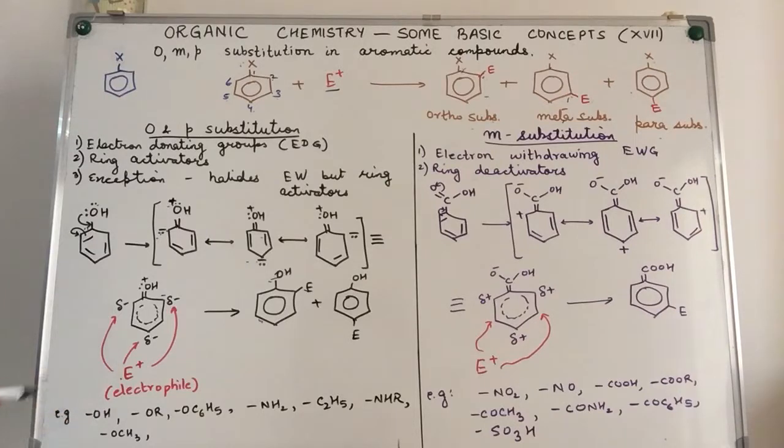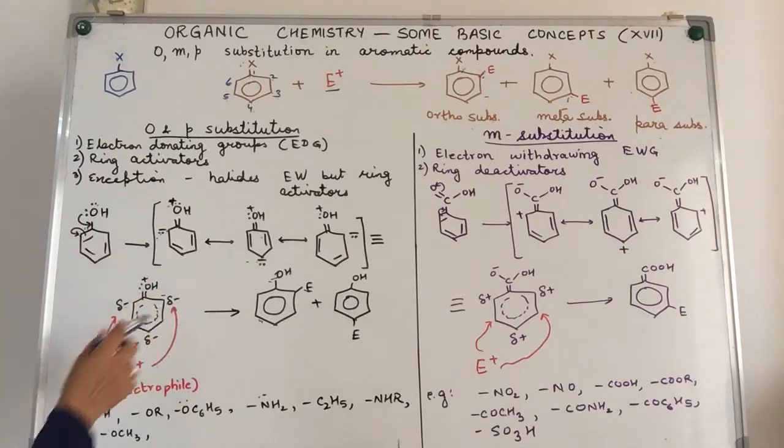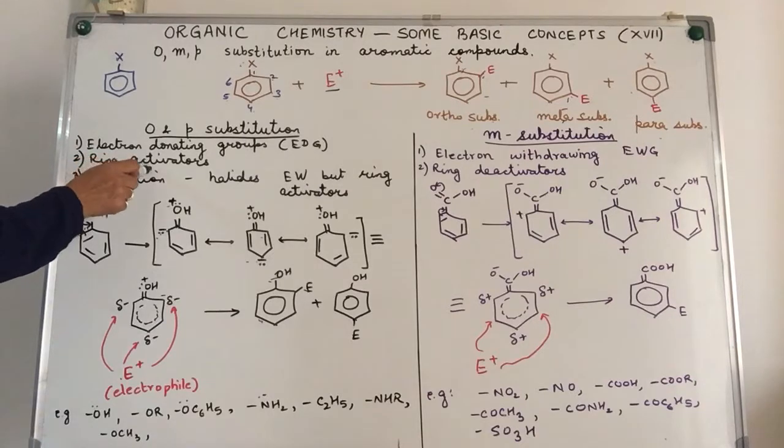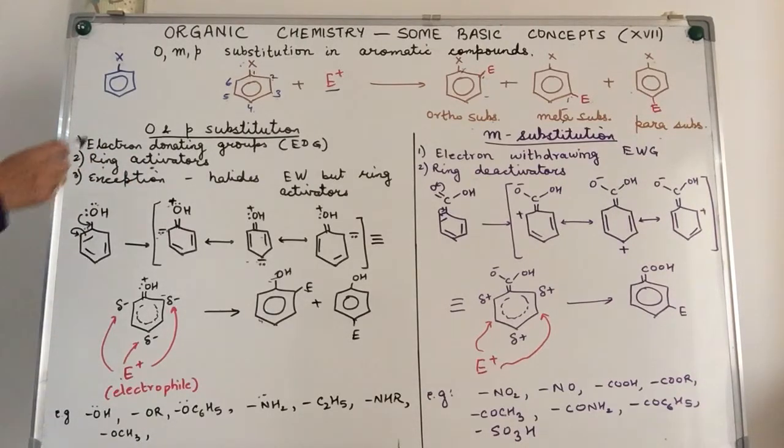Although both of them are formed, usually it could be like a ratio of 40 to 60. But it's not 50-50. They are not produced in equal percentage. What will be the examples of these type of groups? Usually, those groups which are able to donate electrons to the benzene ring. So we have alcohols, we have OR, OC6H5, aminos. They are able to donate electrons to the benzene ring. Since they are releasing electrons in the benzene ring, now the benzene ring is more active. It wants to take in more electrophiles. That is why they are called ring activators. They are electron donating groups, ring activators.